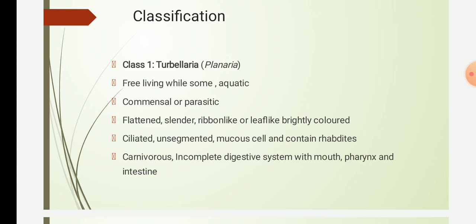Turbellarians have flattened, ribbon-like or leaf-like bodies. They rely on diffusion for much of the exchange of gases, nutrients, and waste. They are often brightly colored, while some marine forms have warning-like coloration, meaning dark-colored.